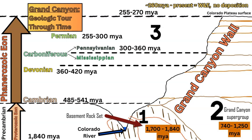Rock set number two is the Grand Canyon Supergroup — the layered and tilted strata — which dates between 740 million and 1.25 billion years old, so a little bit younger than the basement rocks. There are unconformities that separate these rocks as well, and these are again part of the Proterozoic eon. Then we get the Phanerozoic eon.